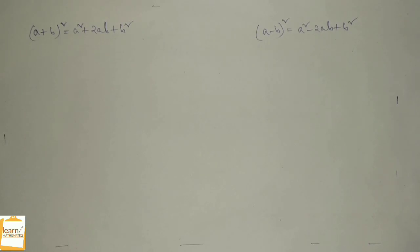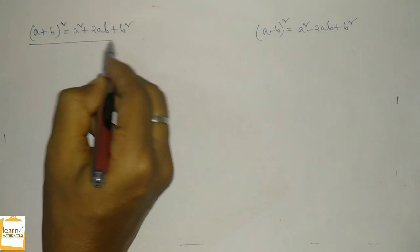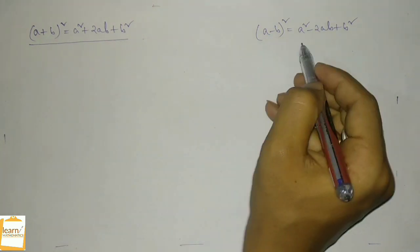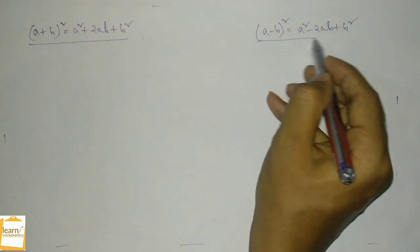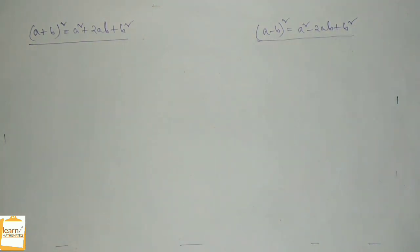Hello guys, welcome to Learn Mathematics. These two formulas — a plus b whole square and a minus b whole square — are two very important formulas of mathematics. Now let us discuss how these two formulas came.